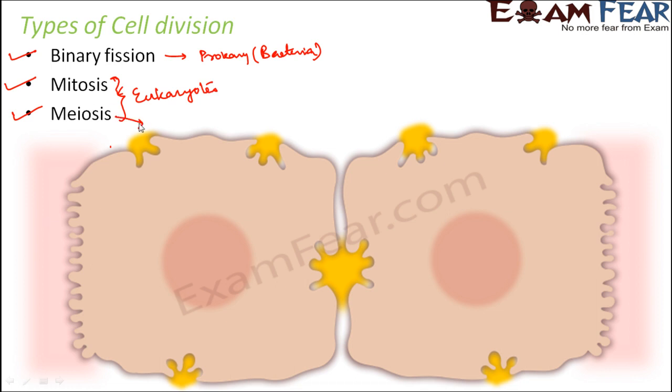Meiosis is more involved with sexual reproduction, whereas mitosis is more involved with asexual reproduction. Now, in this lesson, we will talk about each of these types of cell division in detail one by one. So we will start our discussion with binary fission.